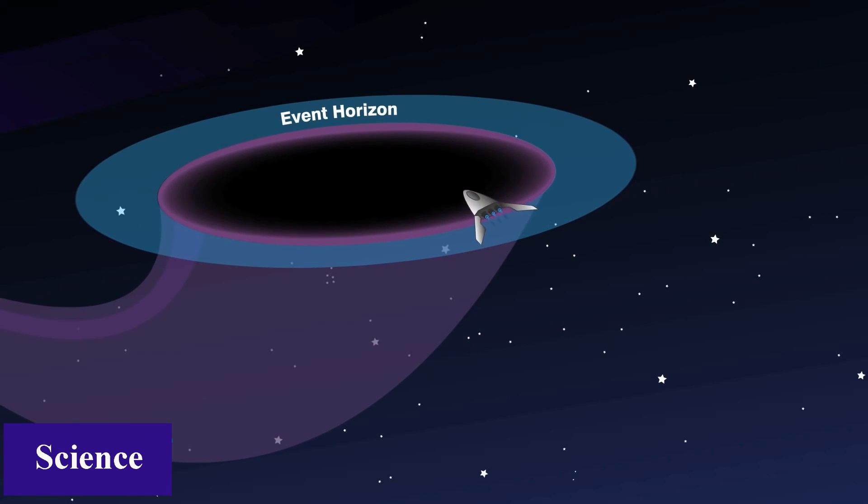The answer? Spaghettification. That's the technical term, at least. As our spacecraft approaches, the gravity will be so much stronger on the side closer to the black hole than at the other side that it will get completely stretched out like a piece of spaghetti.